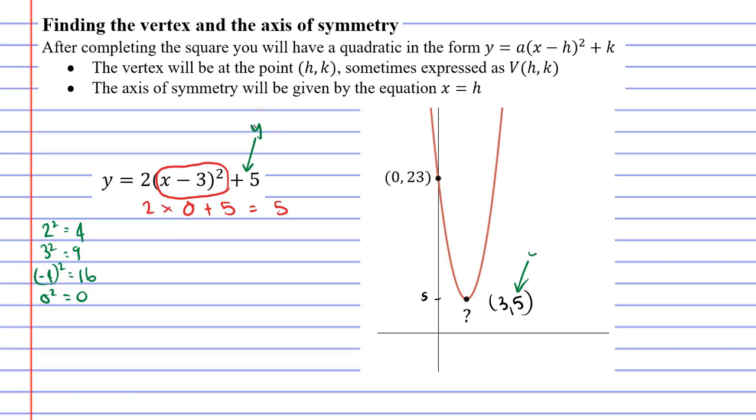So that begs the question, why will my x value be 3? Well, if we look at the part of the function that we circled, we wanted to make this equal 0. And how do we make that equal 0? Well, we simply make x equal 3, because 3 minus 3 is 0. Hence why this 3 and this 5 will give us our vertex, because the vertex for this graph is the lowest point.